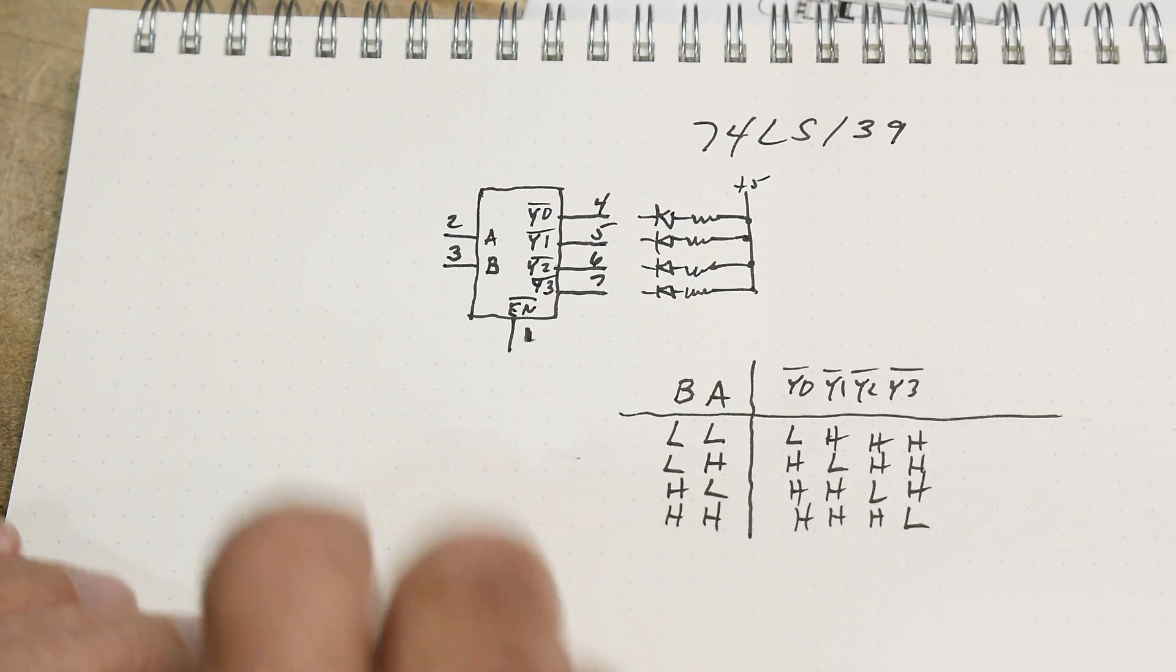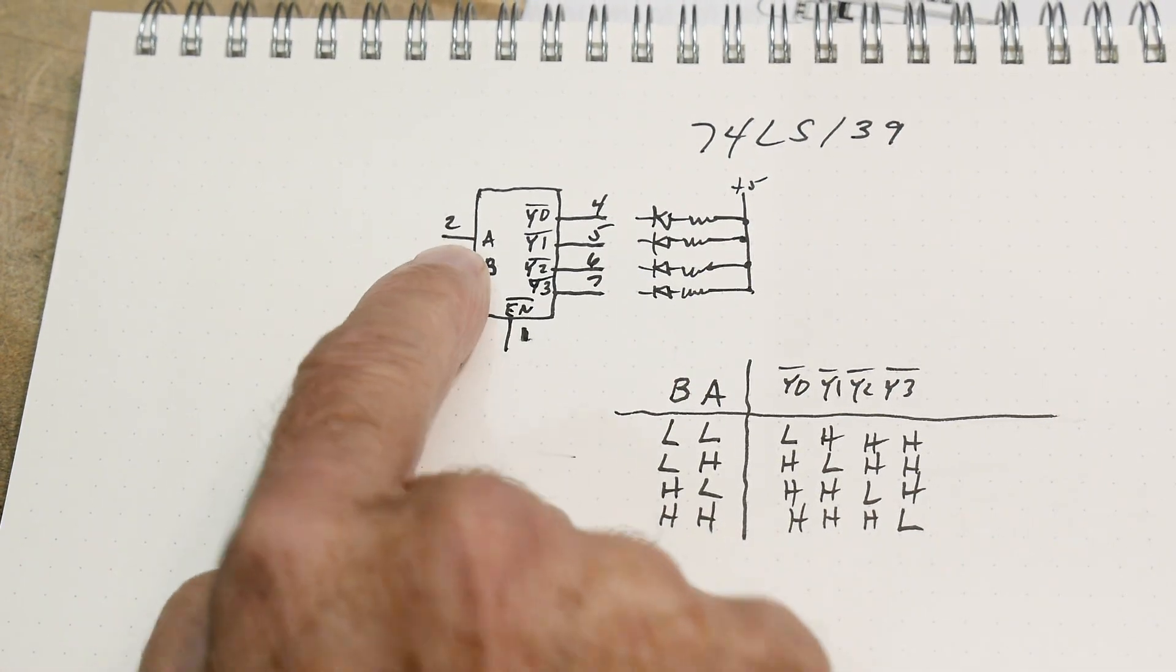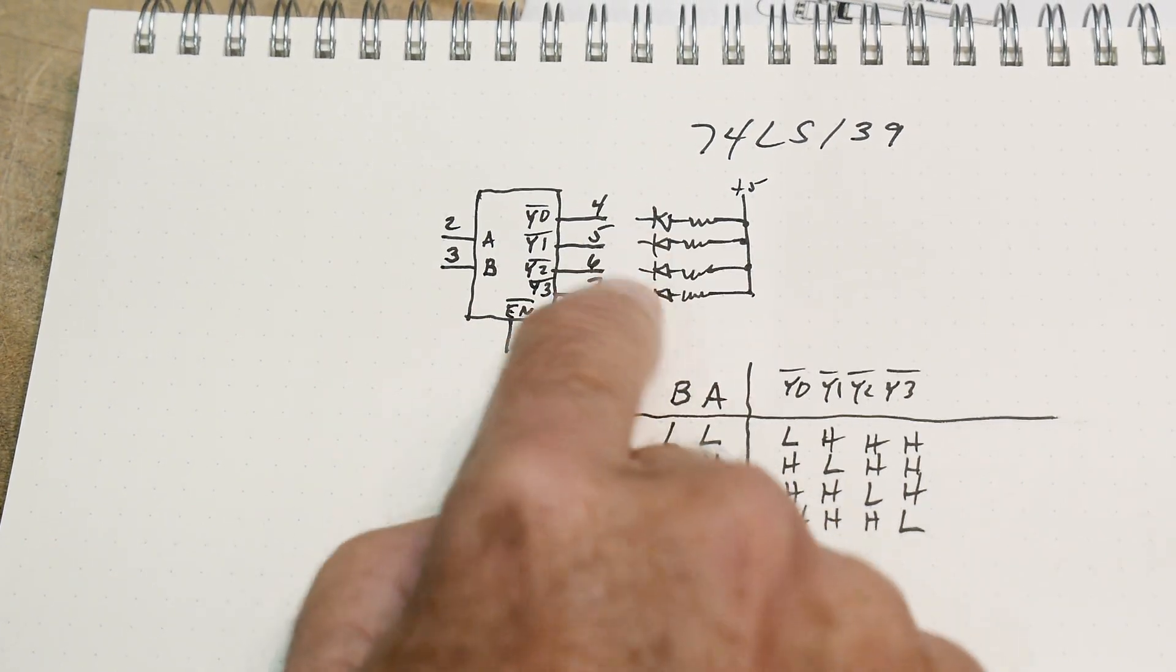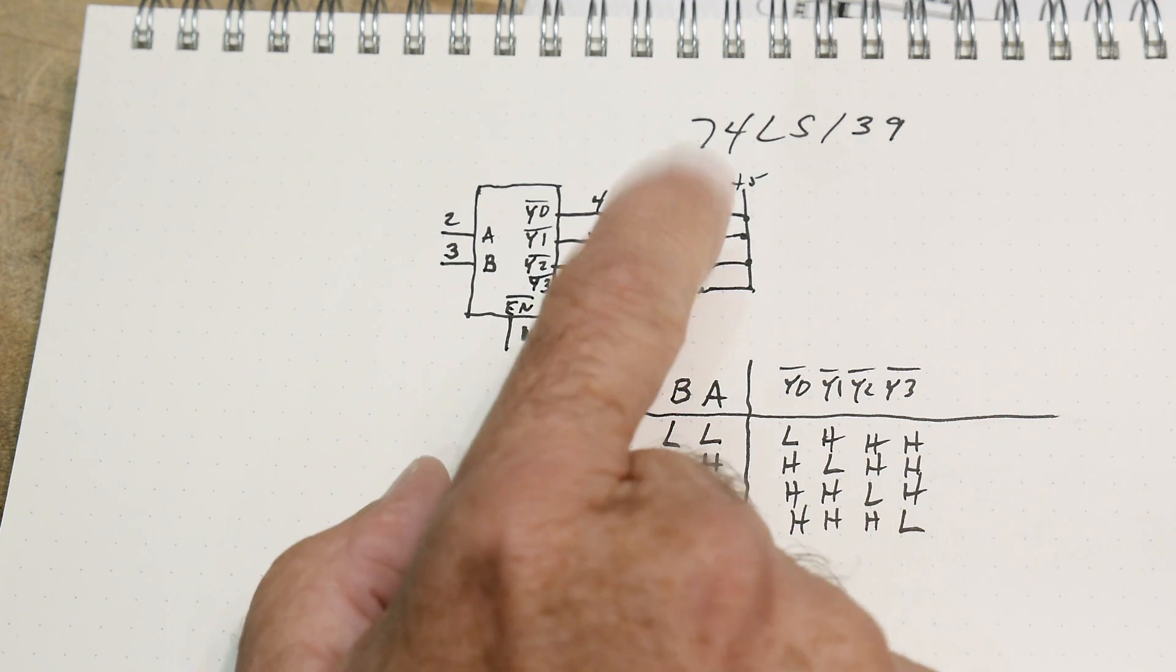And then it will select the right chip or the right bank or whatever like that. So what we're going to do here is we're going to bring in the inputs A and B, and then the outputs will be Y zero, Y one, Y two, Y three. And I'm going to hook up some LEDs so we can watch them.